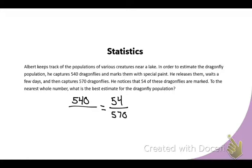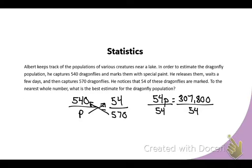He releases them, waits a few days, and then captures 570 dragonflies. He notices that 54 of them are marked. So out of those two values, which value do you think belongs in the numerator on the other side? 54, because now both of my numerators are values that are marked dragonflies. Same thing on both sides of our proportion. And he caught 570. That was the population of his sample. To the nearest whole number, what is the best estimate for the dragonfly population? That's the variable that I'm solving for.